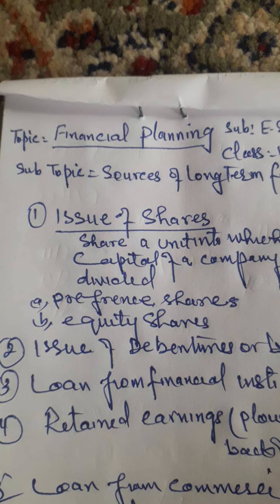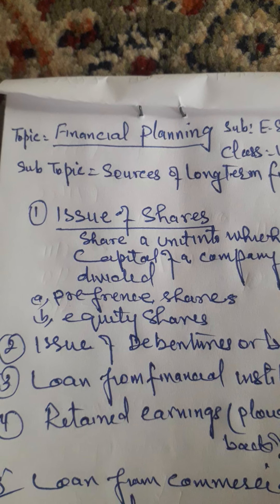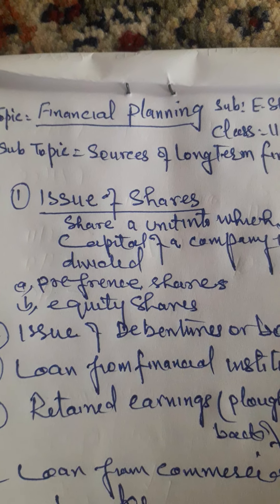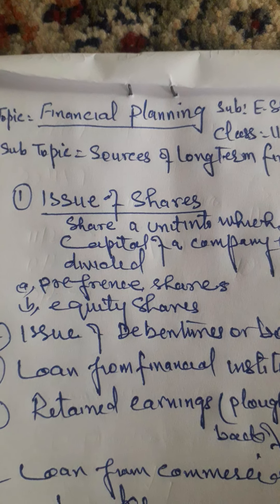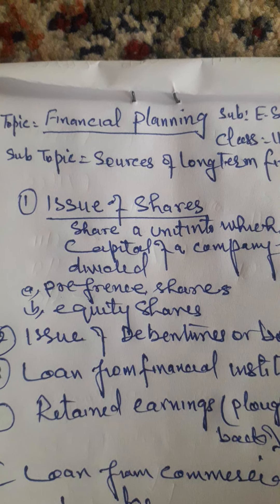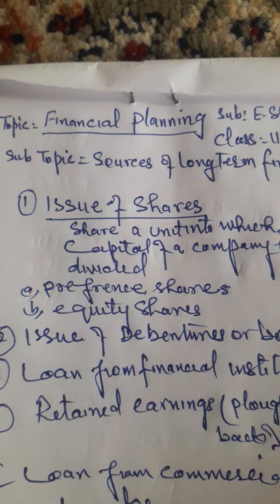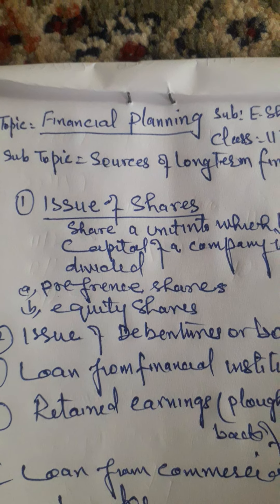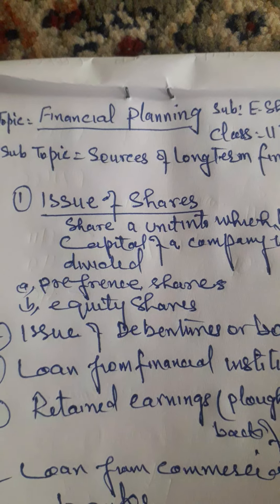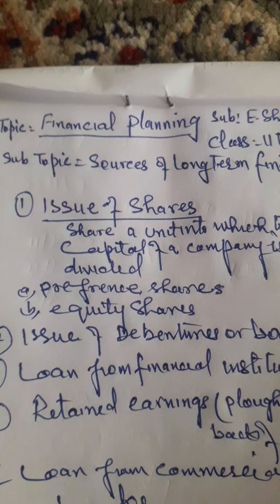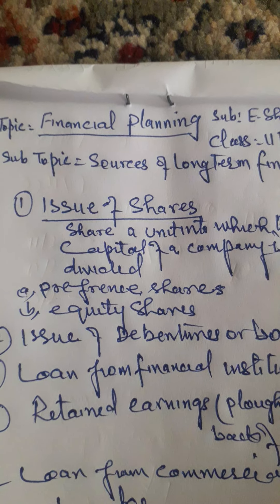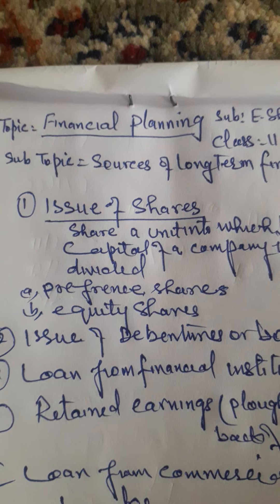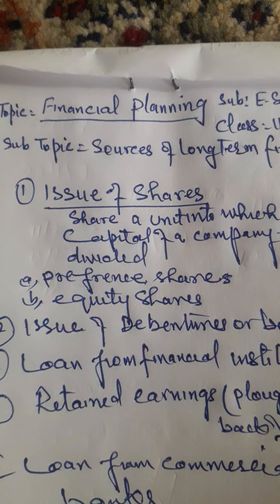Shares are of two types: one is preference shares and the second is equity shares. Preference shares are the shares which carry a preferential right over equity shares with reference to payment of dividend — when dividend is paid, the preference shareholder is given preference.